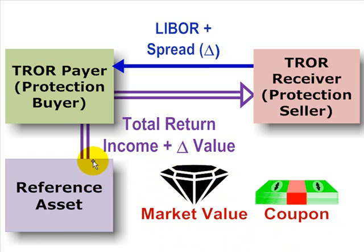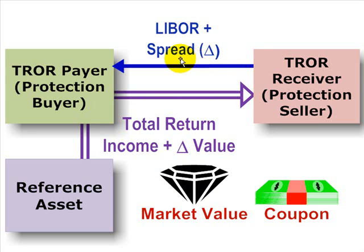So it's a transfer of both components of that underlying obligation. In exchange for that, the receiver pays a preferred interest rate, typically LIBOR plus some spread. In part, that'll be based on the receiver's credit rating. The lower this counterparty's credit rating, the higher this spread.